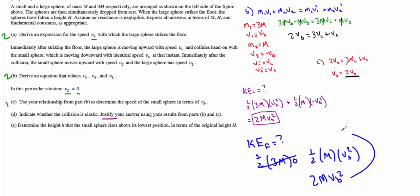The initial and final kinetic energies are equal — both are 2M·VB squared — so yes, the collision is elastic. Part D is worth three points: only one point for correctly identifying it as elastic, and the other two points for clearly showing the kinetic energy before equals the kinetic energy after.